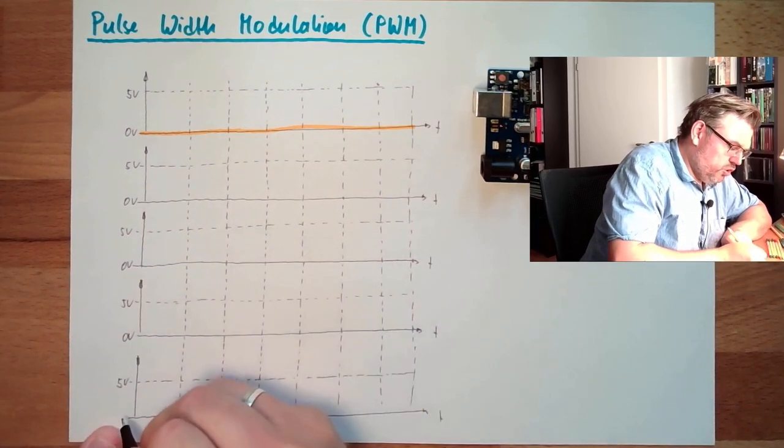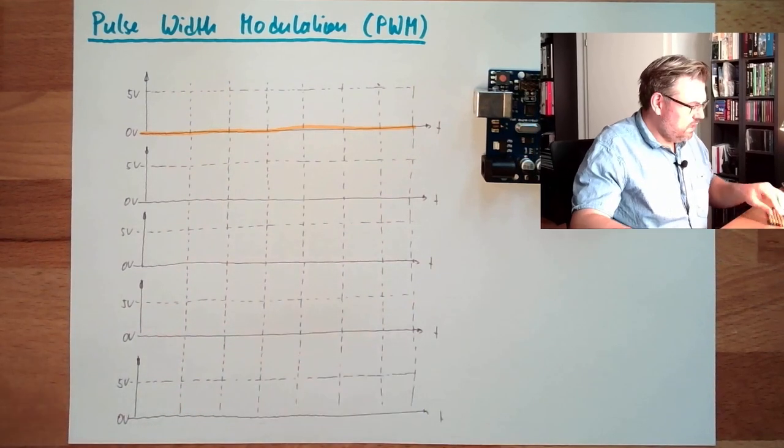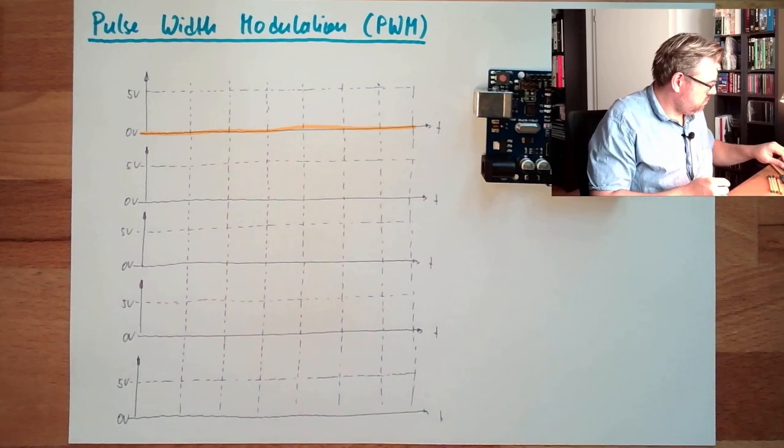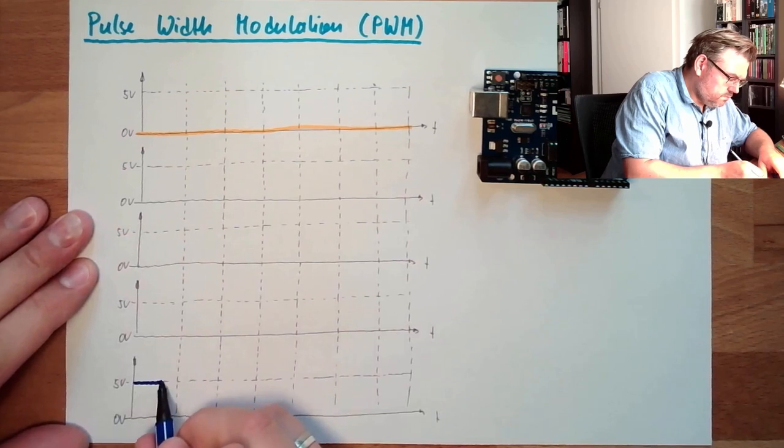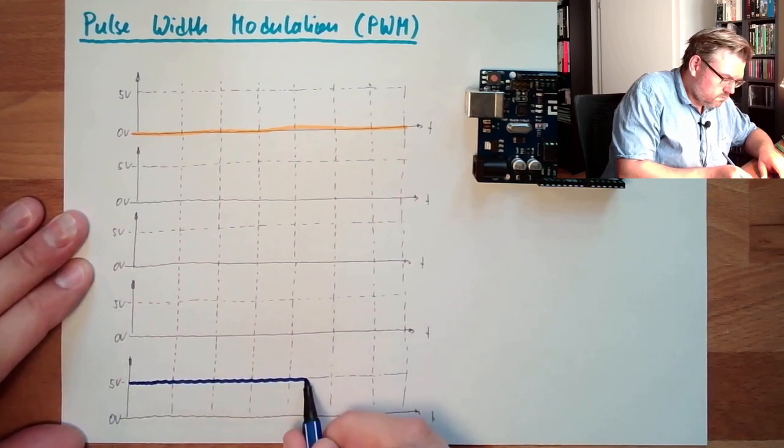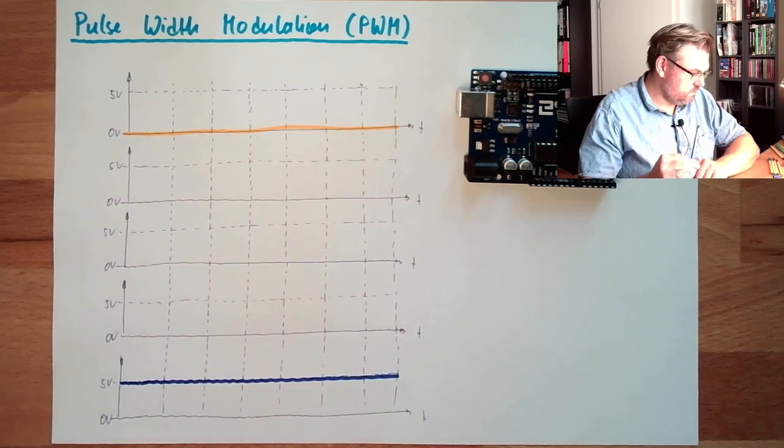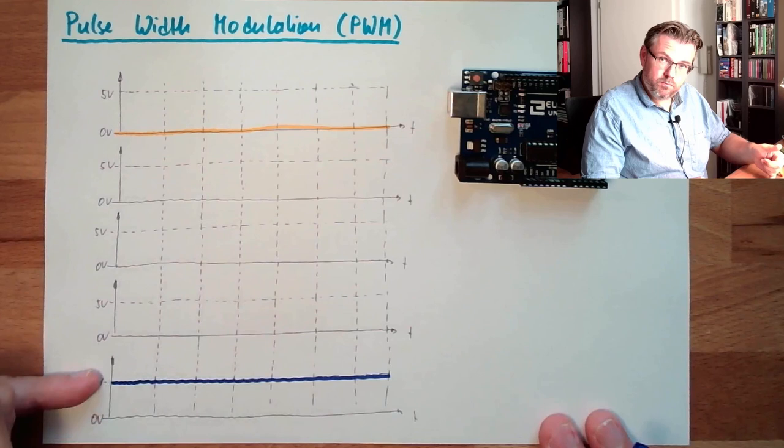And the other extreme, if we make a digital write, for instance, then it is always on. This would be output of zero, this would be output of one.